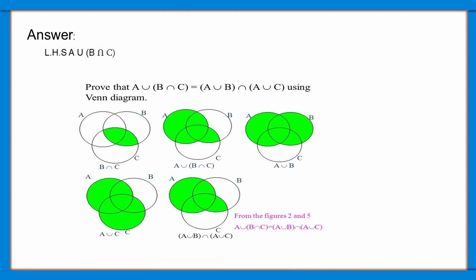From figures 2 and 5, A union (B intersection C) is equal to (A union B) intersection (A union C) is proved.